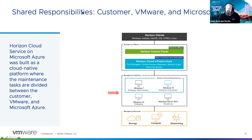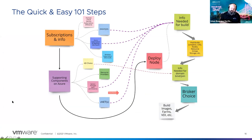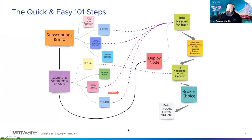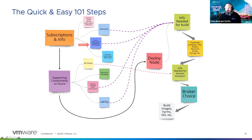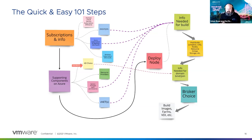With Horizon Cloud on Azure, Microsoft is responsible for hardware, storage, servers, and the hypervisor. VMware is responsible for the control plane and any objects we build — that includes the nodes, Unified Access Gateways, load balancers, network security groups, and resource groups. The only part you as an administrator are responsible for is what you build: Windows 10, Windows 7, Windows Server, RDSH hosts. From an IT support perspective, a lot of things get reduced significantly.